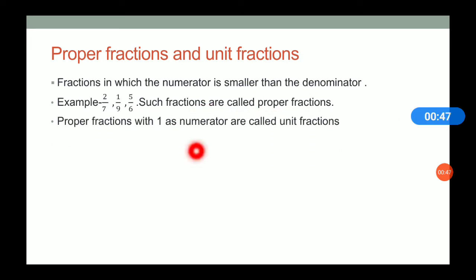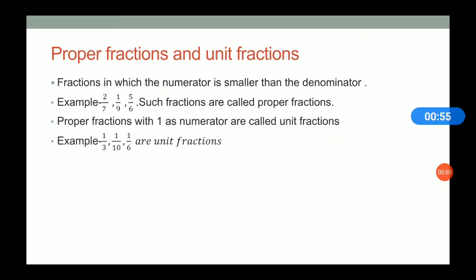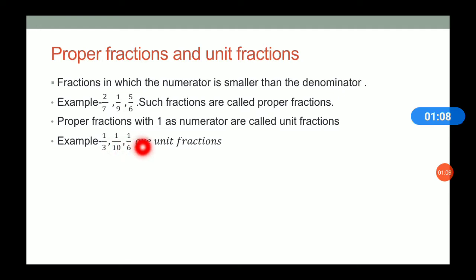There is another part of proper fractions: when a proper fraction has 1 as the numerator, it is called a unit fraction. For example, 1/3, 1/10, 1/6 — all are proper fractions because the numerator is smaller than the denominator, and all have numerator as 1. So that is why they are called unit fractions — unit means 1.